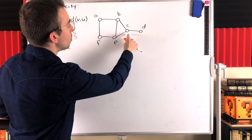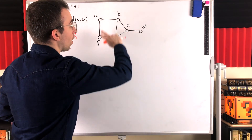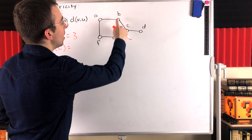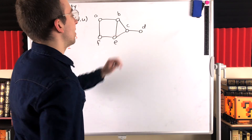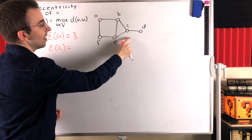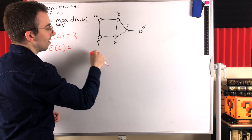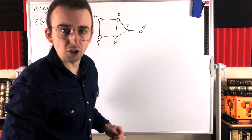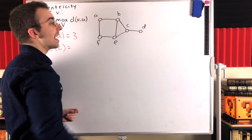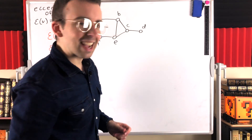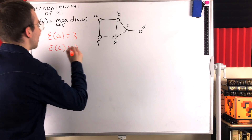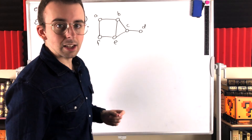The distance between c and all of its neighbors is one — those are e, b, and d. The distance between c and a is two. The distance between c and f is also two. So the greatest distance between c and any other vertex in the graph is two, and thus that is the eccentricity of c.